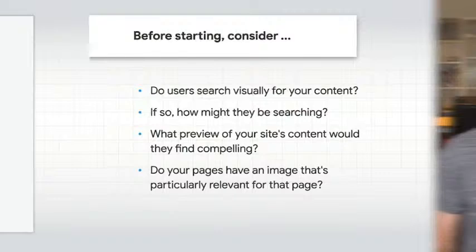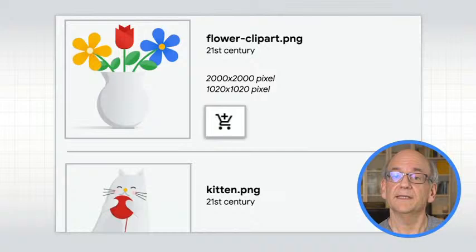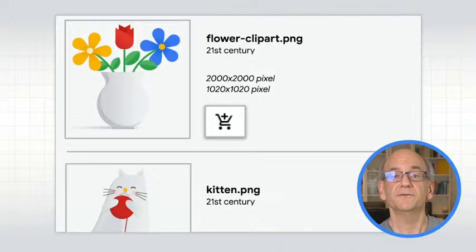For example, if you publish poetry and decorate it with generic floral clip art, it's unlikely that users would be searching for flower clip art in order to read your poetry. On the other hand, if you created those graphics and want to provide them to others, then that might be a legitimate search query. In the end, it's up to you to determine if and how you'd like content from your website to be shown in Google — you know your audience and your site's goals best.